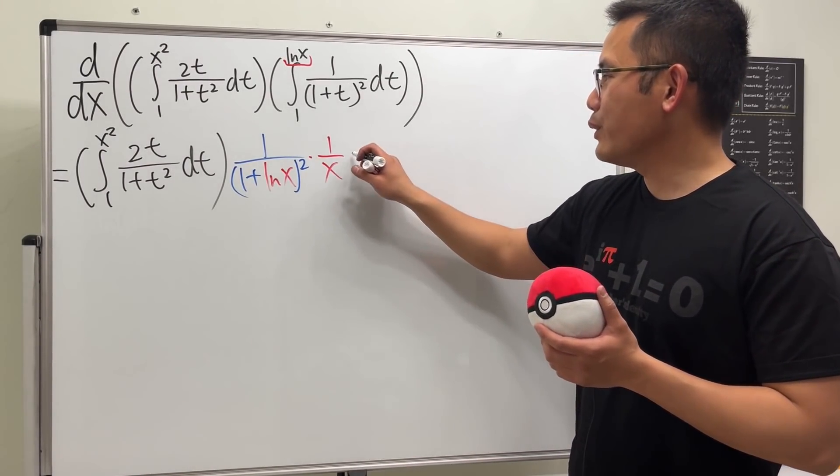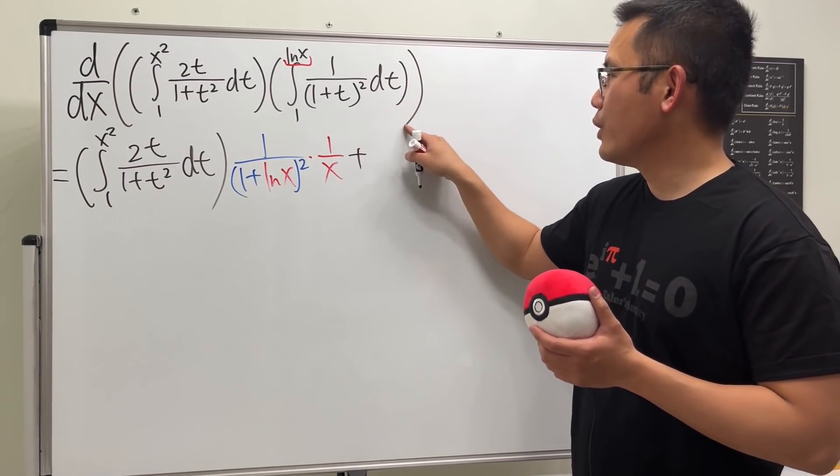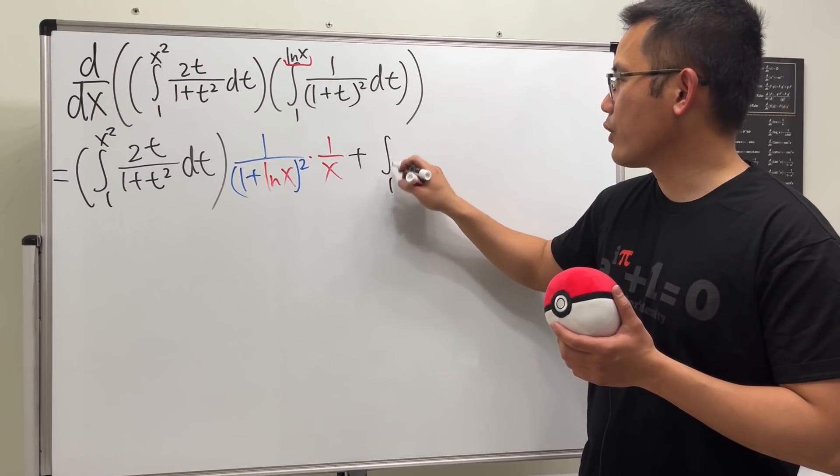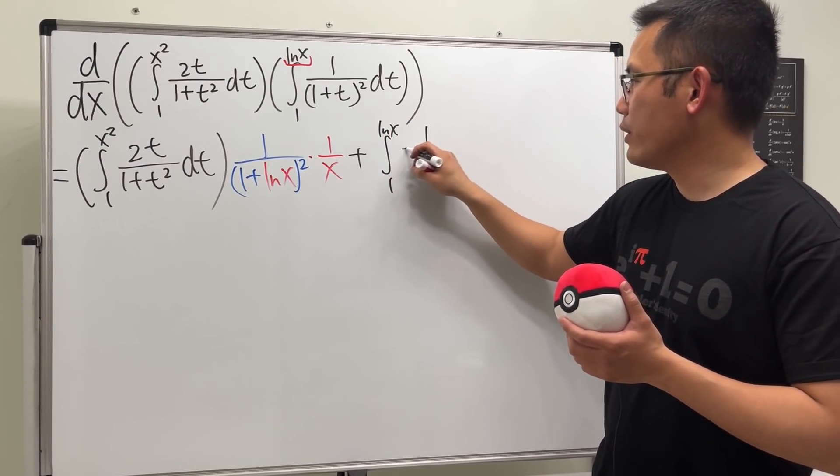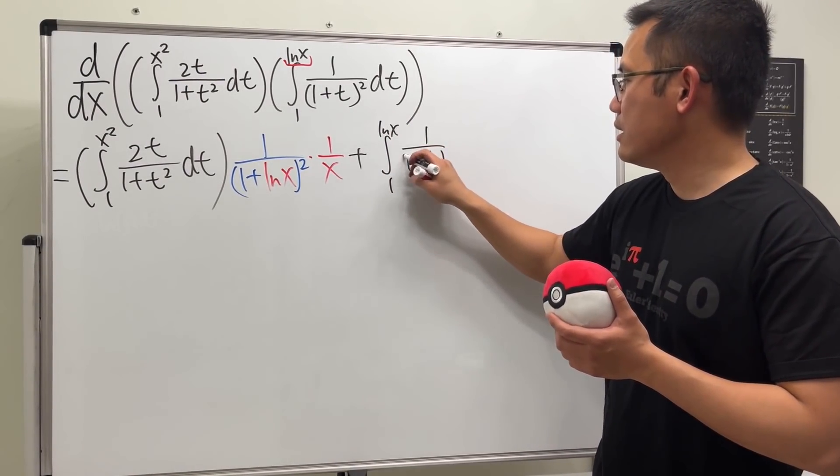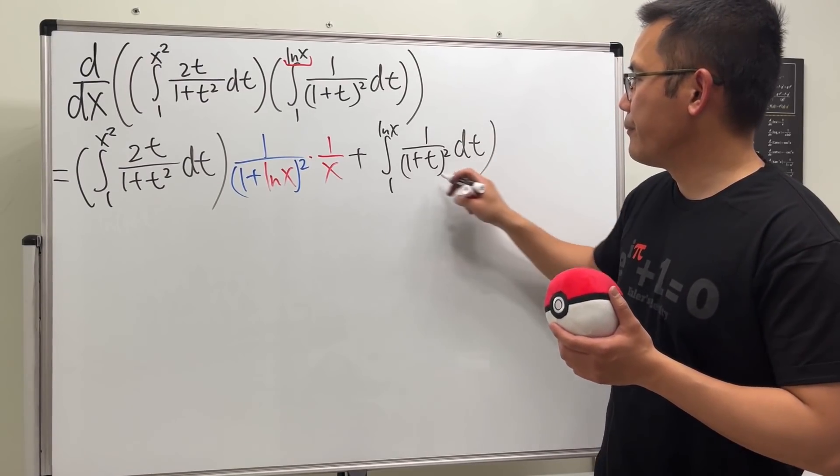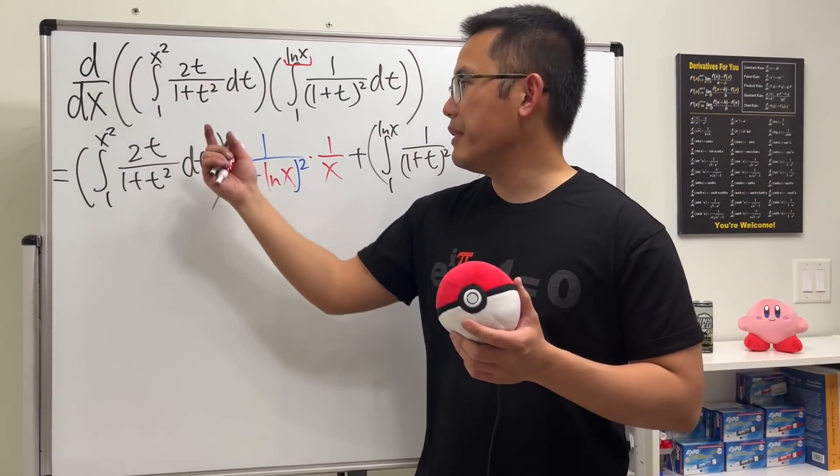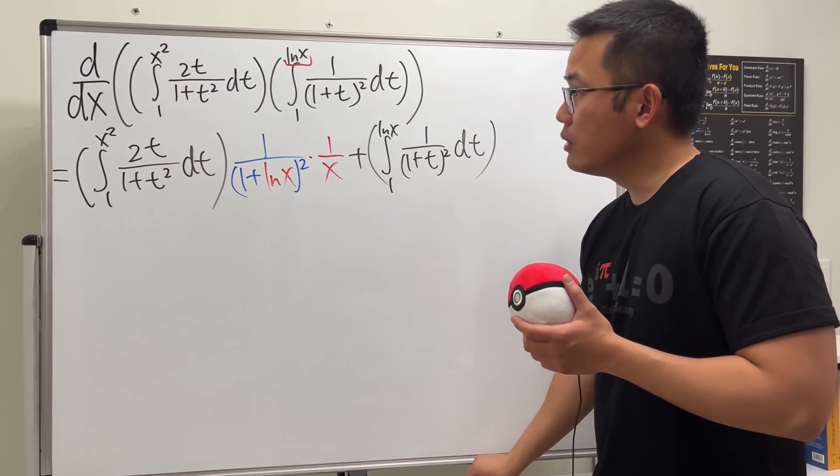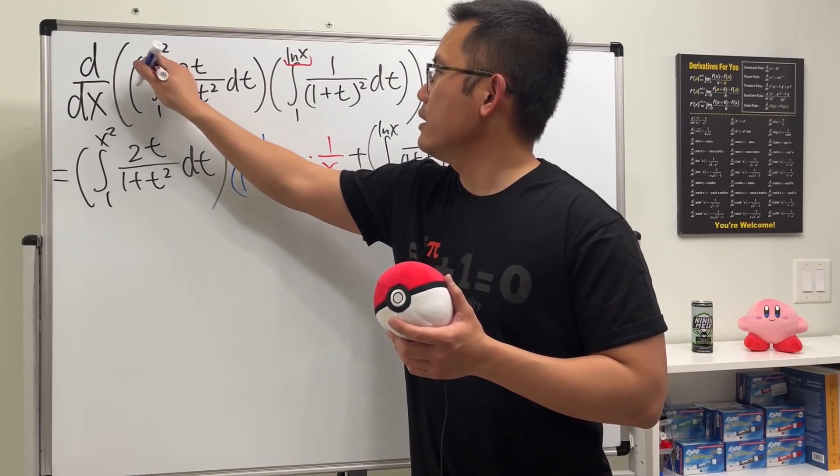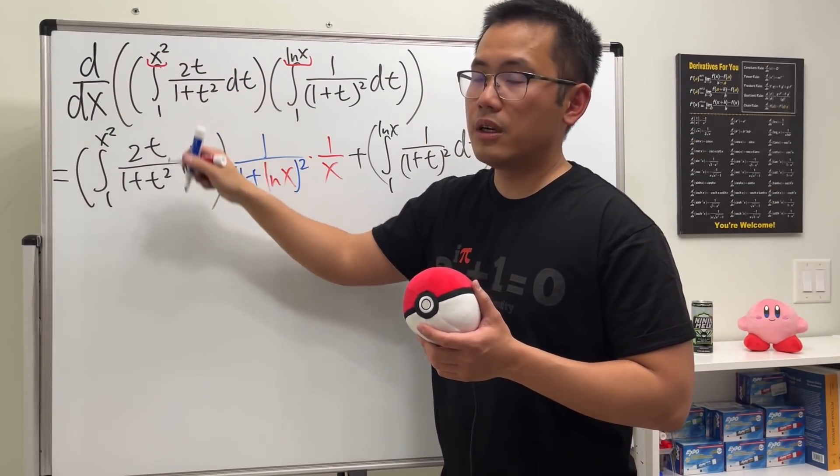Then we can continue. We are going to add the second function, which is the integral going from 1 to ln(x), and then we have 1 over 1 plus t squared dt. Then again, same thing, we are going to just plug in the x squared into the t.